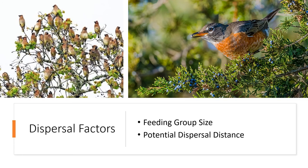We base these hypotheses on what we call dispersal factors: feeding group size, which depends on whether the animal feeds alone or in large groups, and potential dispersal distance. Since resident species don't travel far, they tend to deposit seeds in the same area. But migratory and nomadic feeders, as they move to follow resources or migrate, have a much greater potential distance over which they could disperse those seeds.